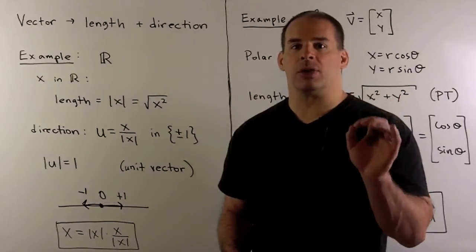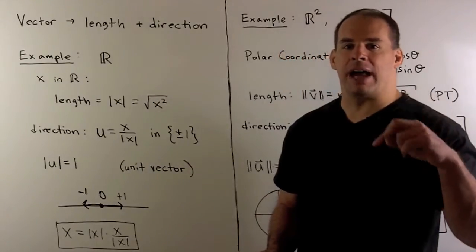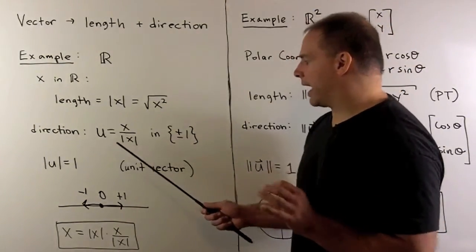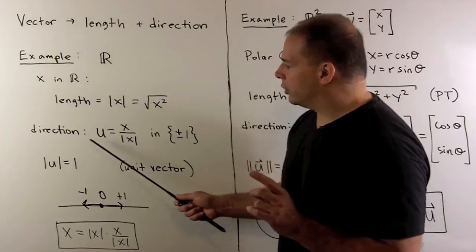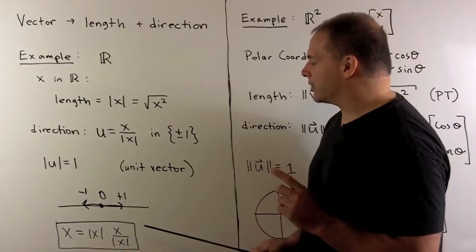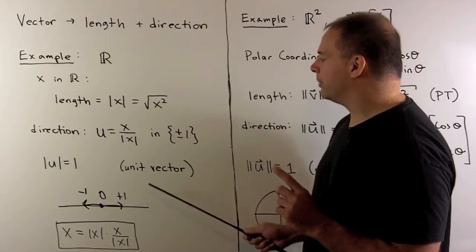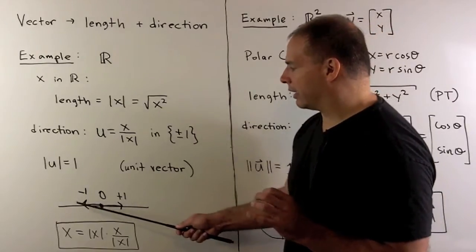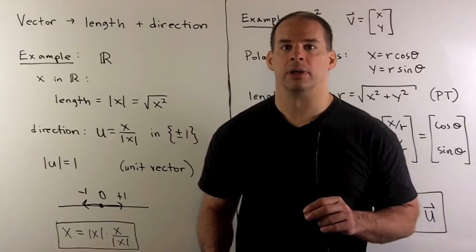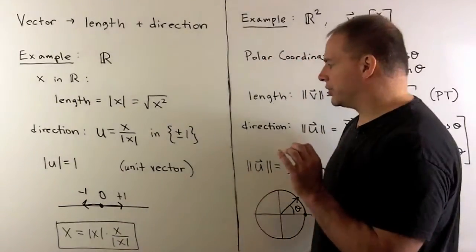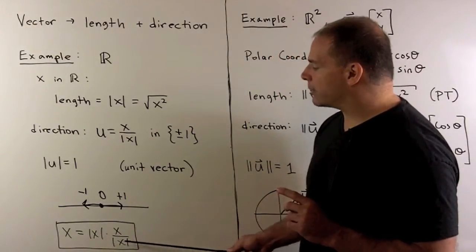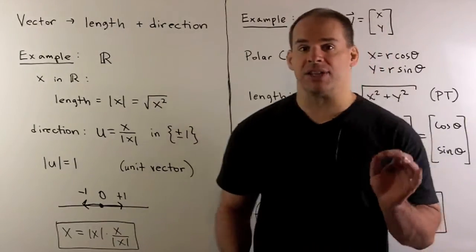If x is non-zero, we could take x and divide by its length or absolute value. This gives us a direction or a unit vector. Note: the unit vectors in R1 are just the numbers plus or minus one. If we put in a positive number, we're pointed in the positive direction; if we put in a negative number, we'll be pointed in the negative direction. If we have zero, there's no direction attached to it. So the punchline is, we can write x as the absolute value of x times x over the absolute value of x — the unit vector — if x is non-zero.